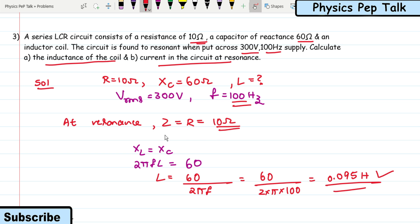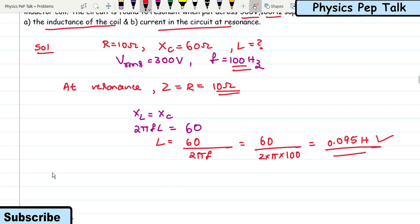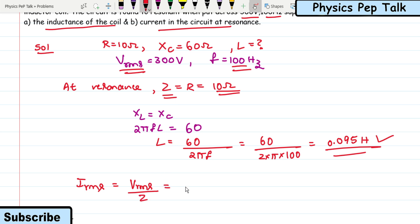For part (b), the current in the circuit at resonance: since V_RMS is given as 300 volts and the impedance at resonance is Z = 10 Ω, I_RMS = V_RMS / Z = 300 / 10 = 30 amperes. This is the required solution for part (b).